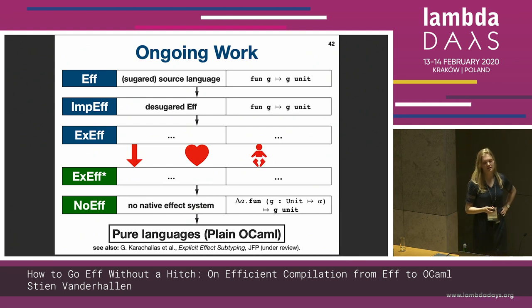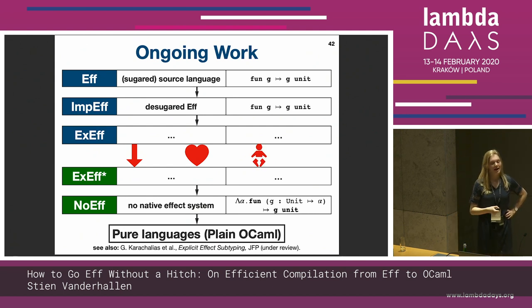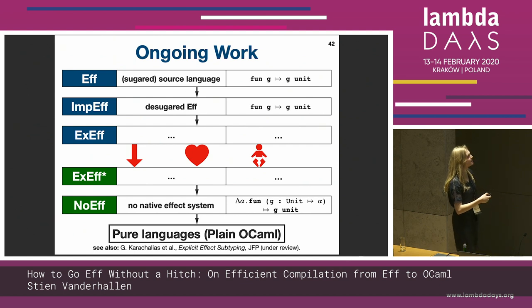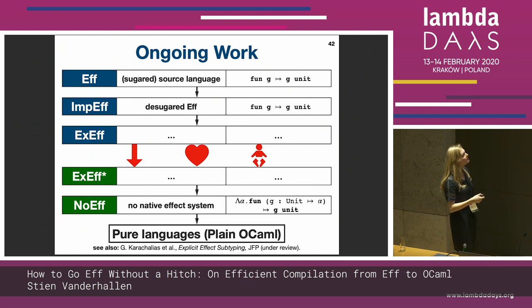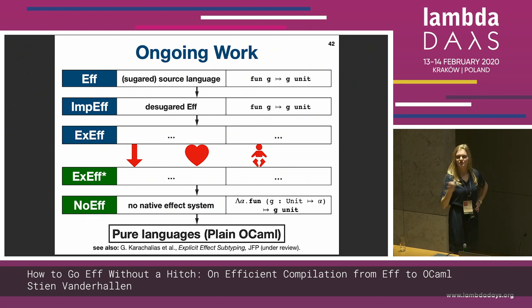And the final option of course is to make them have a baby — have yet another intermediary language which we could put in between, and we could define transformations to and from.